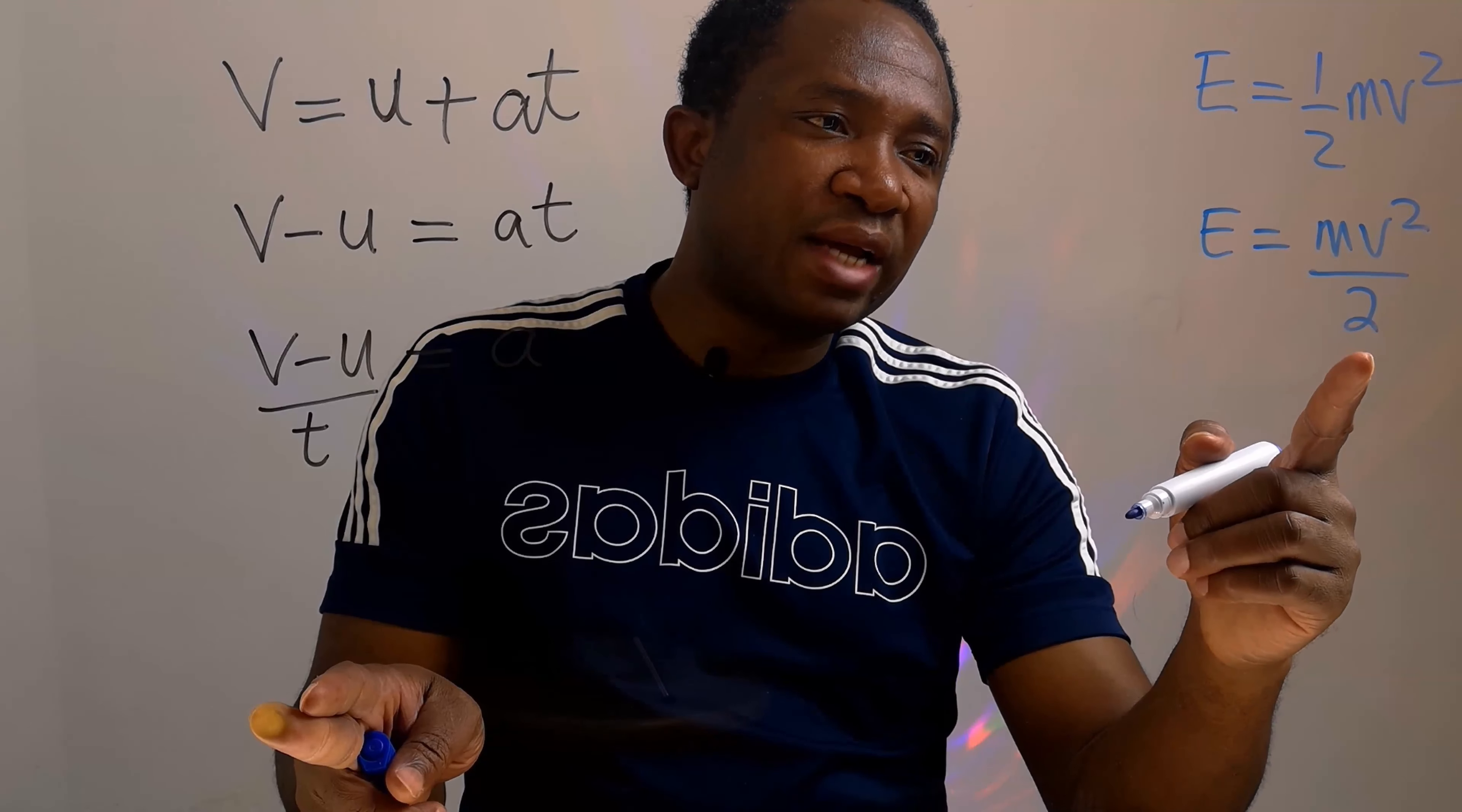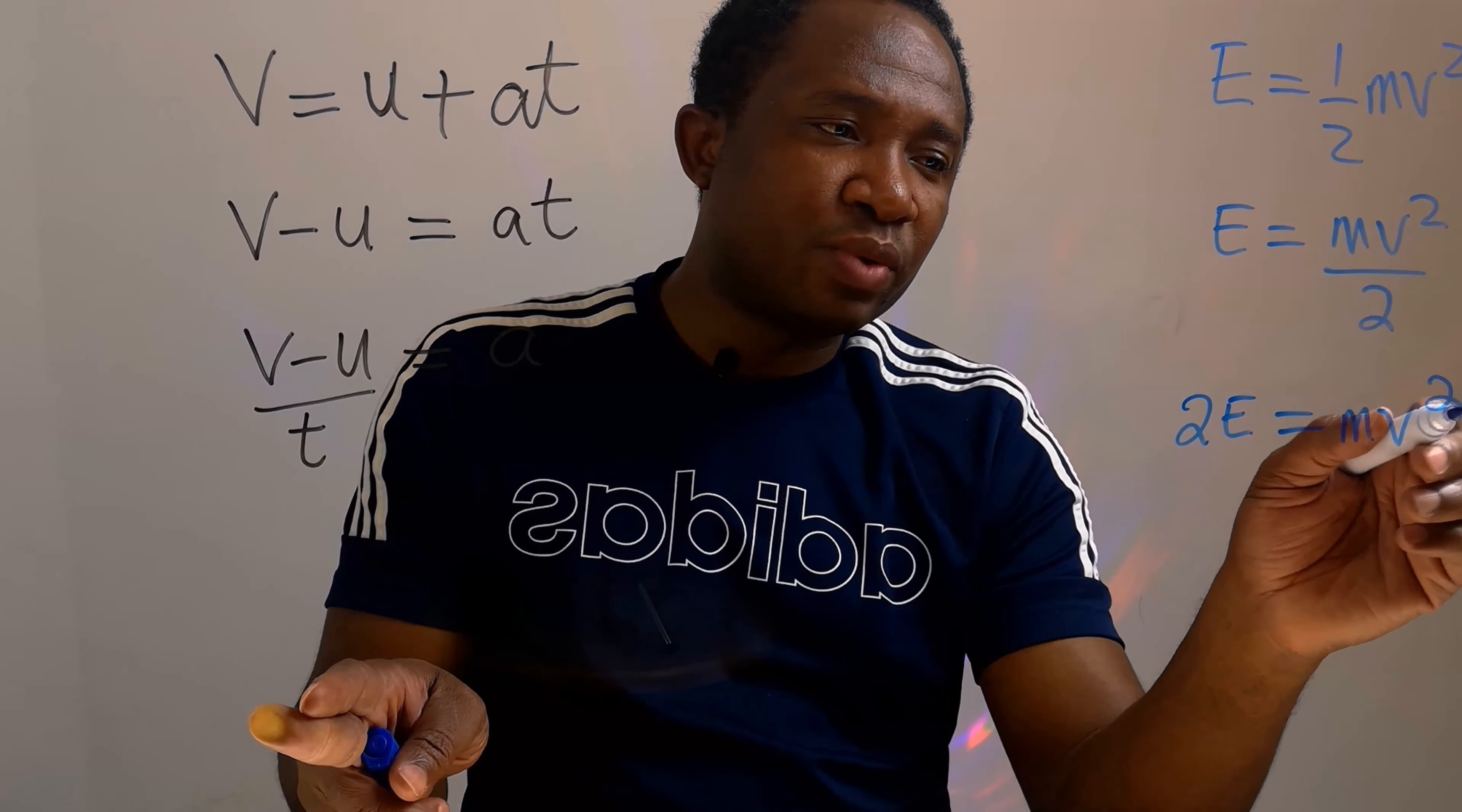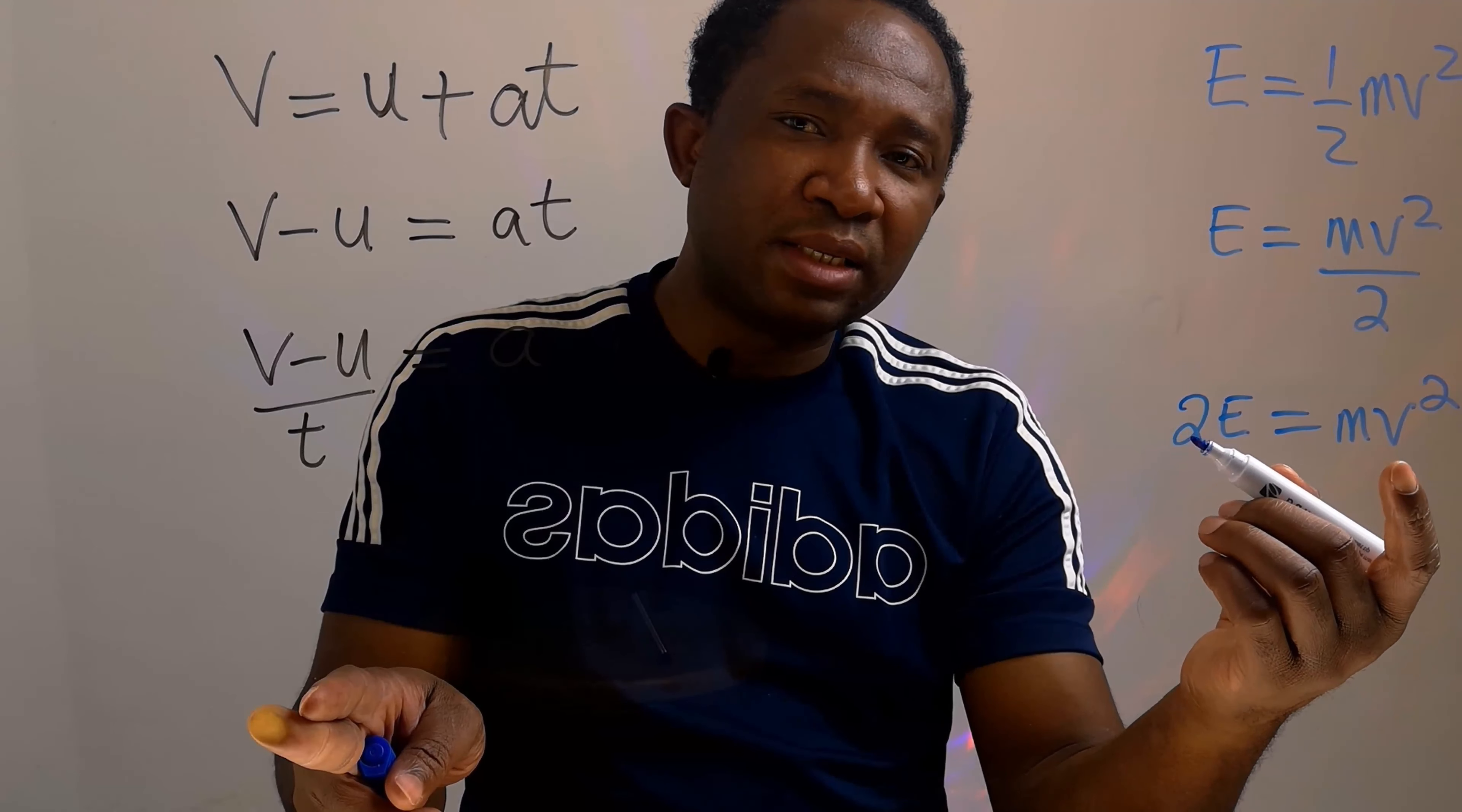2 is dividing. If you divide and you move across the equal sign, you are going to multiply. And here we'll have m v squared. We're looking for v. m we need to move. m is multiplying. If you're multiplying and you leave the equal sign, on the other side you will divide.